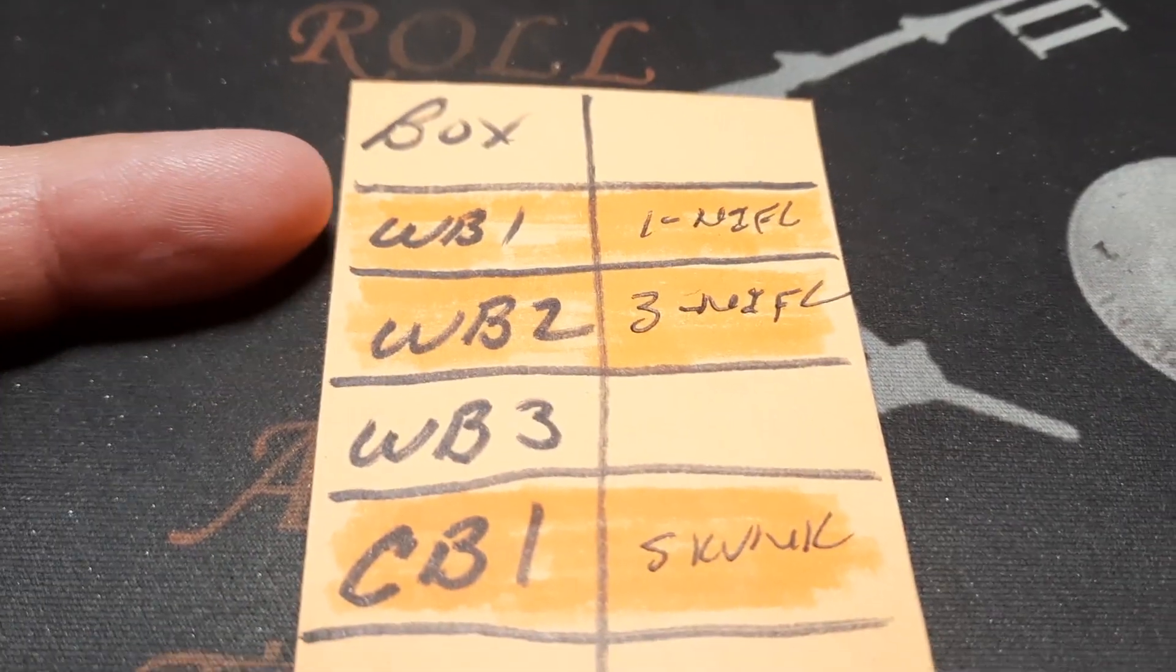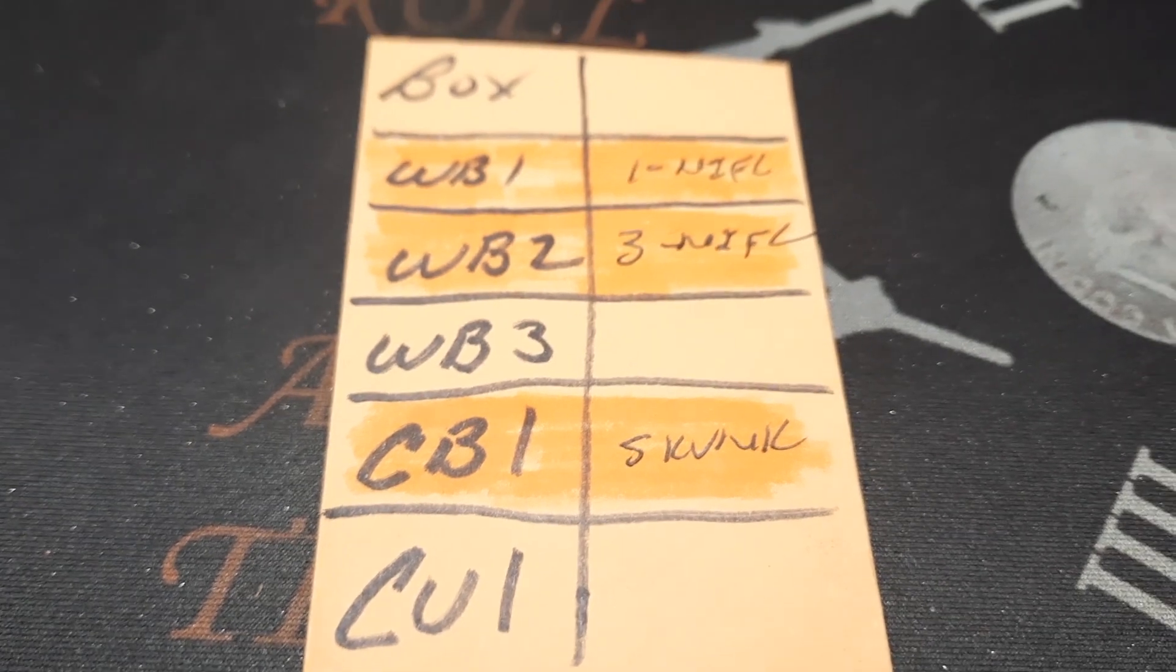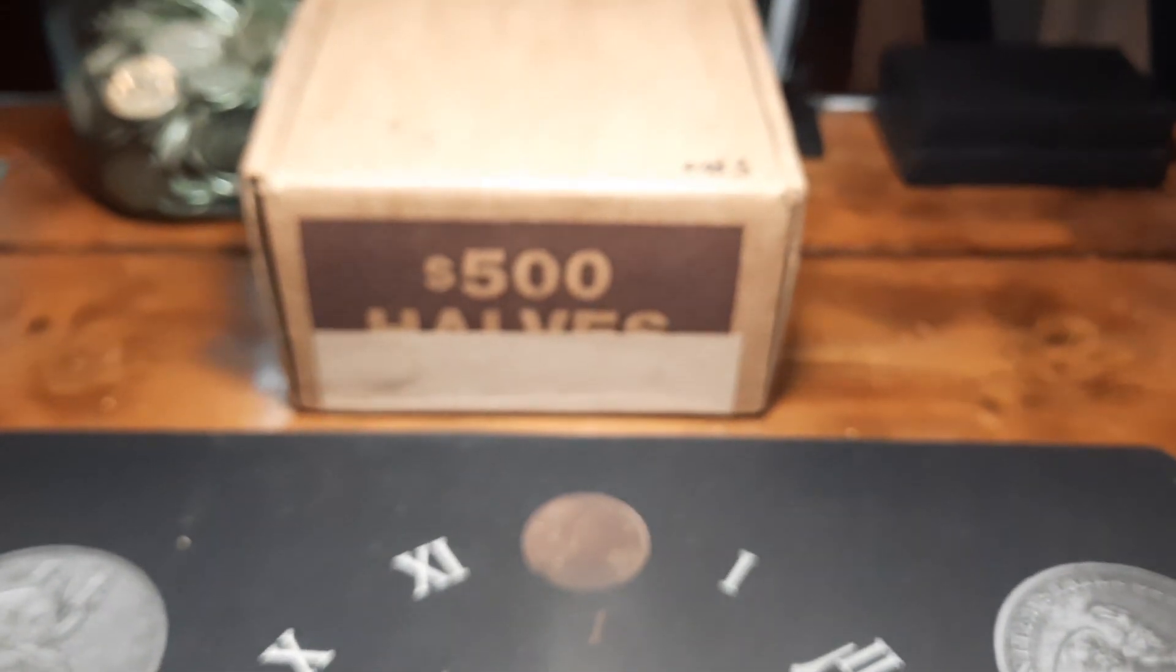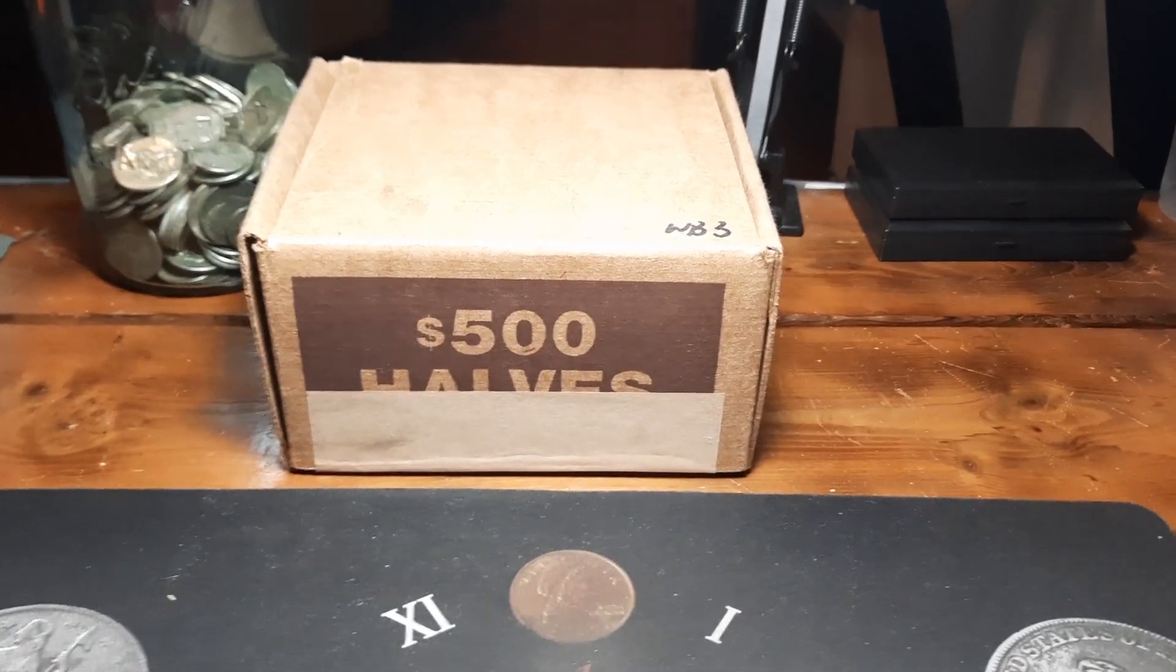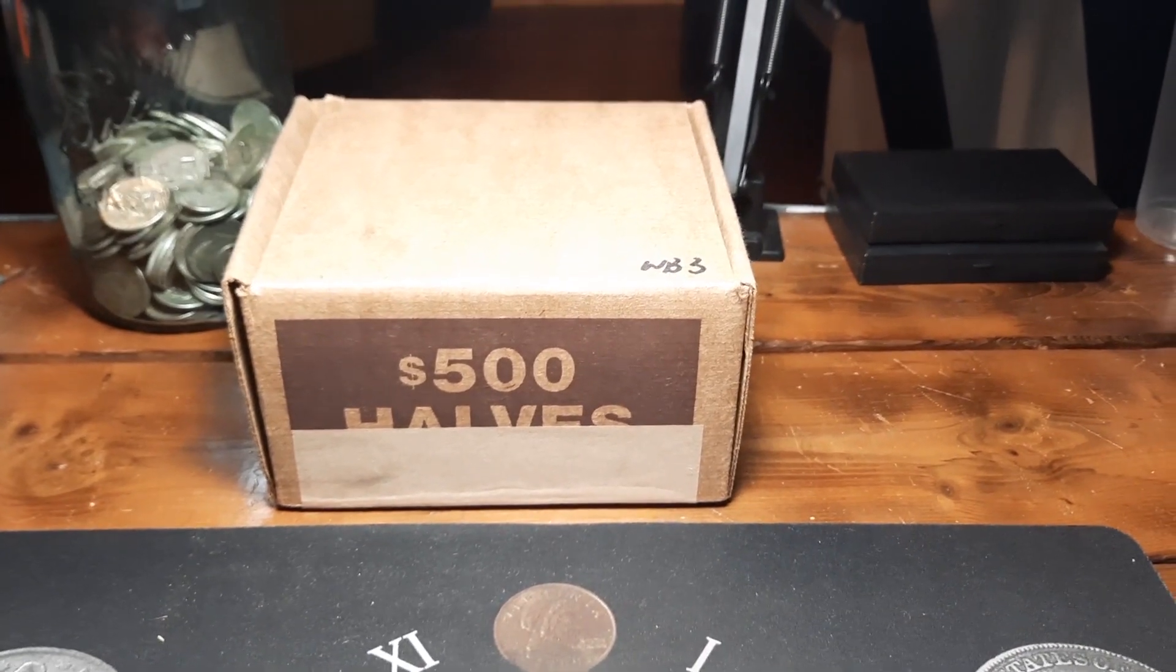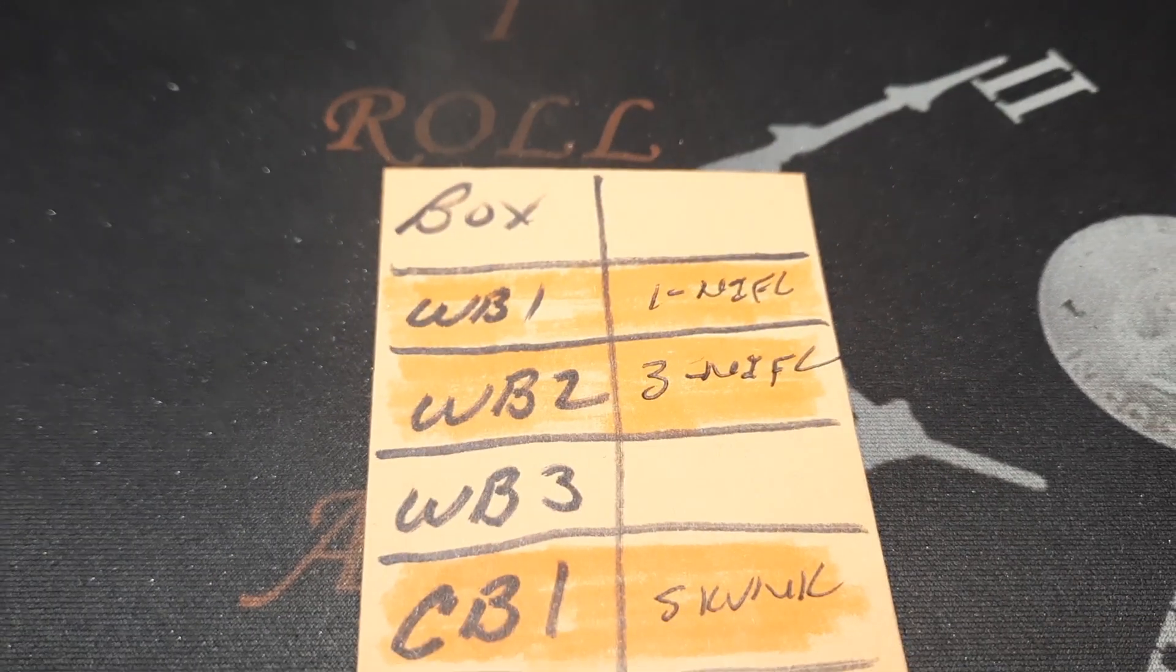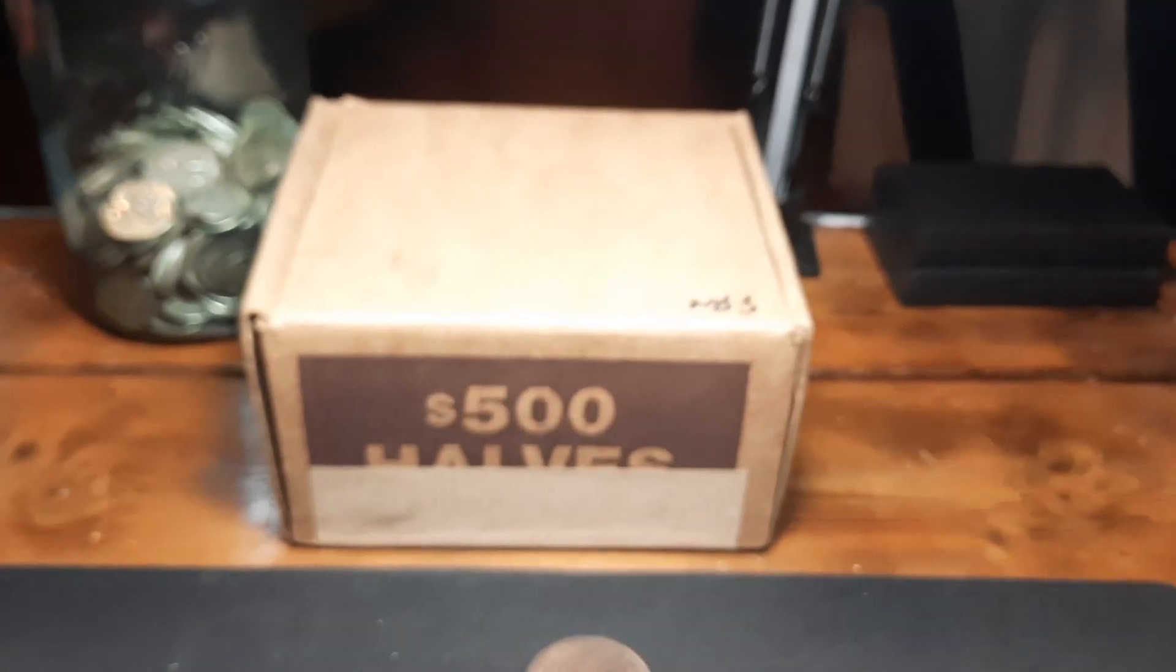WB1 we had a NIFC. WB2 we had three NIFCs. CB1 was a skunk. The only find on the night was a 72 light planchet other than the NIFCs. It was tough but we got two more boxes. We still got a chance to get some silver so we're gonna go ahead and hunt WB3 first. We didn't have much luck in the first ones but we'll see what we have.